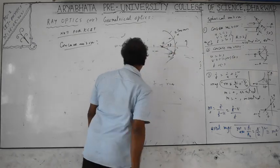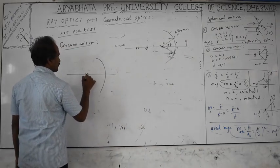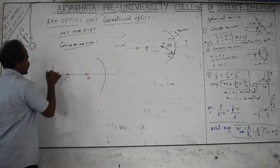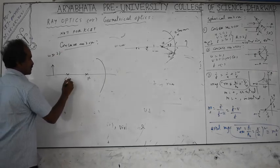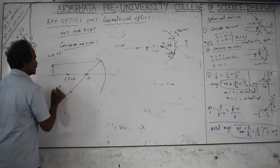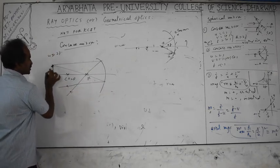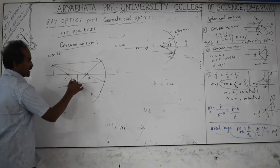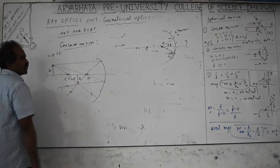Let me draw two ray diagrams. First, for u greater than 2f: object is placed beyond C (which is at 2f). Light ray parallel to the principal axis reflects through focus F; light ray through focus reflects parallel to principal axis; light ray through center of curvature C retraces its path. Where these reflected rays meet is the image — between f and 2f, real and inverted.